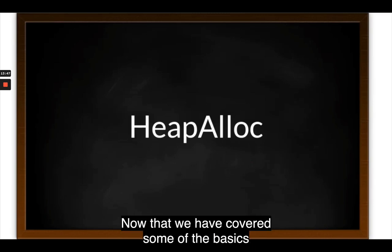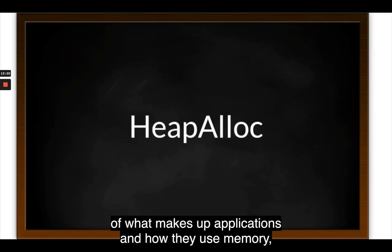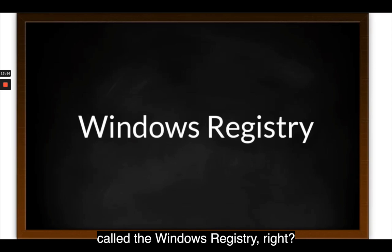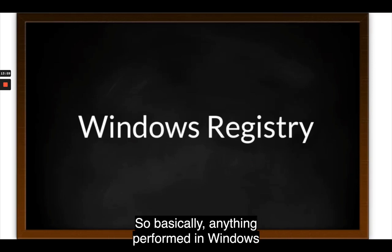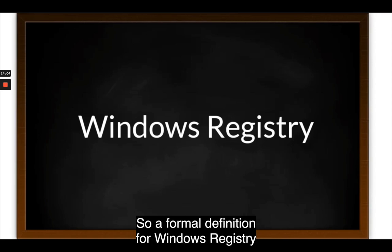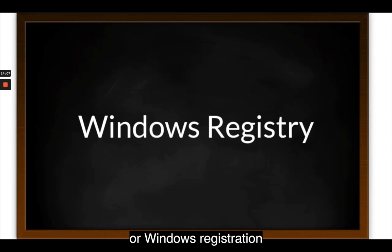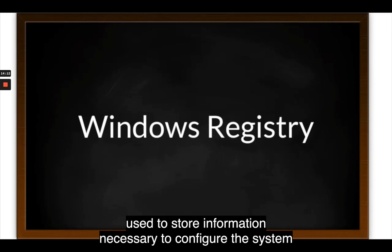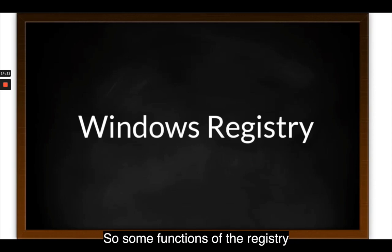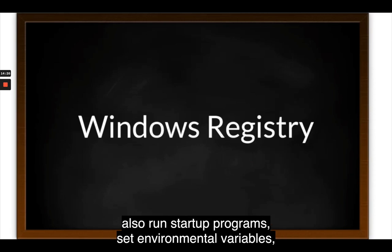Now that we've covered some basics of what makes up applications and how they use memory, let's look at the Windows registry. Basically, anything performed in Windows refers to or is recorded in the registry. A formal definition: the Windows registry is a hierarchical database used to store information necessary to configure the system for one or more users, applications, and hardware devices.